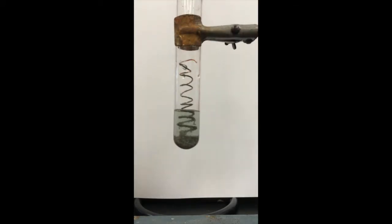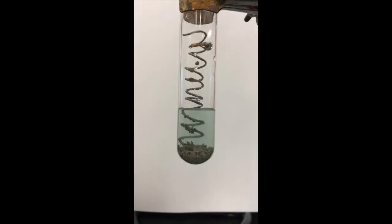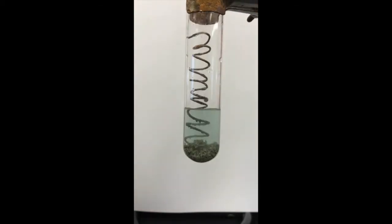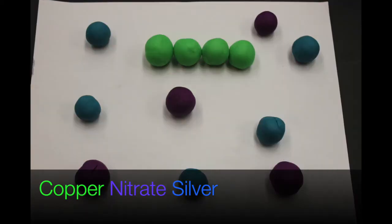Some notable things our group observed during our chemical reaction were how quickly the crystals formed on the copper wire, along with the color of our solution compared to the color of our classmate's solution, which both differed in shades of blue.